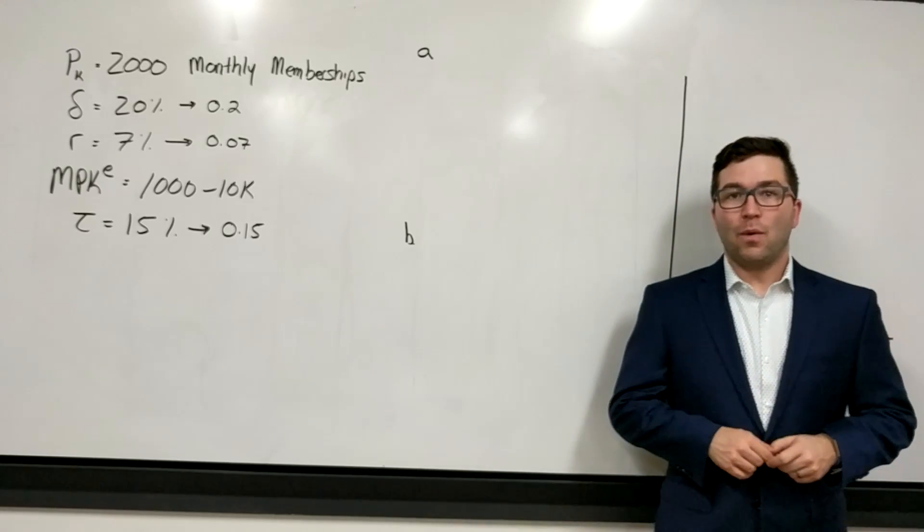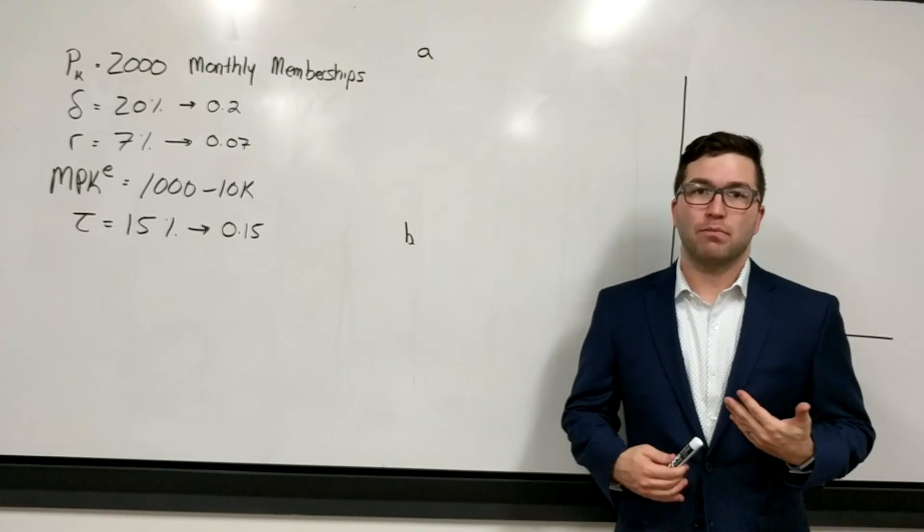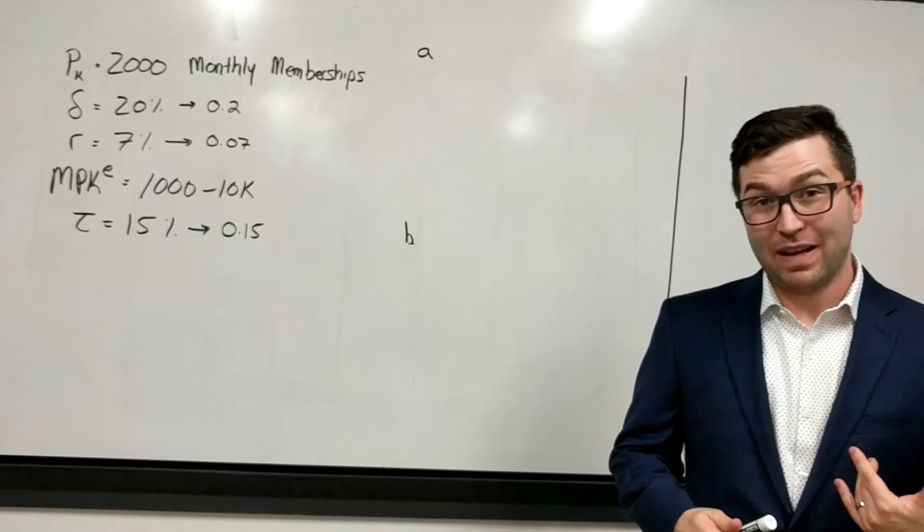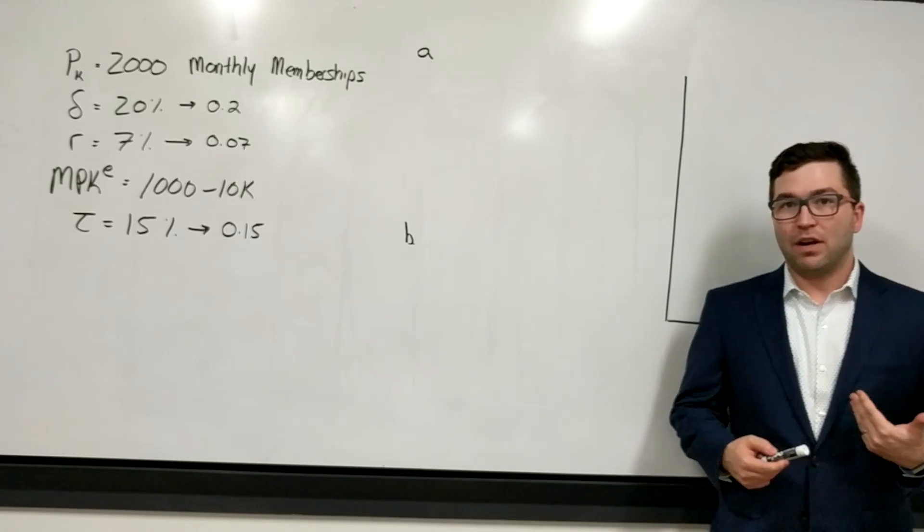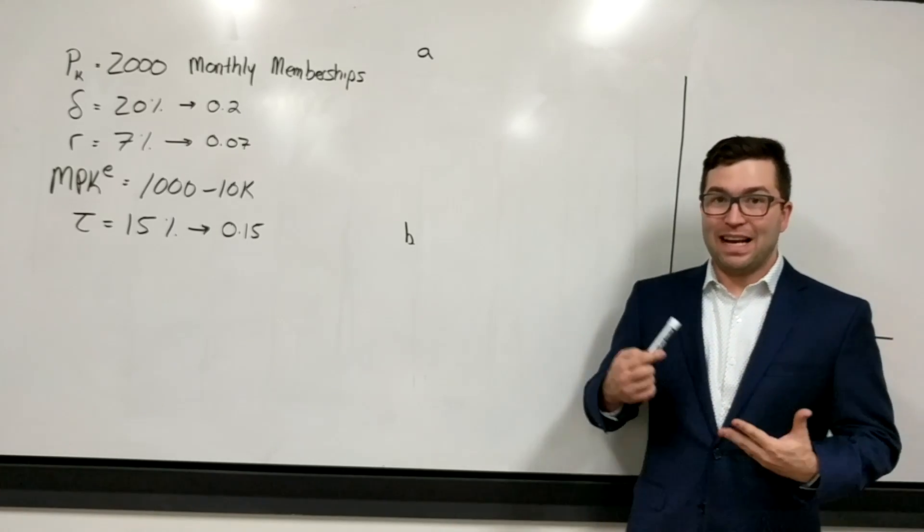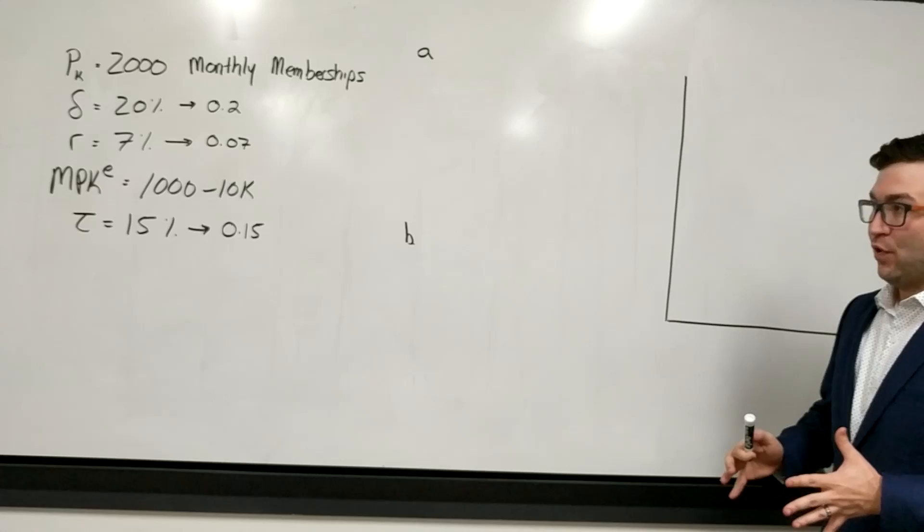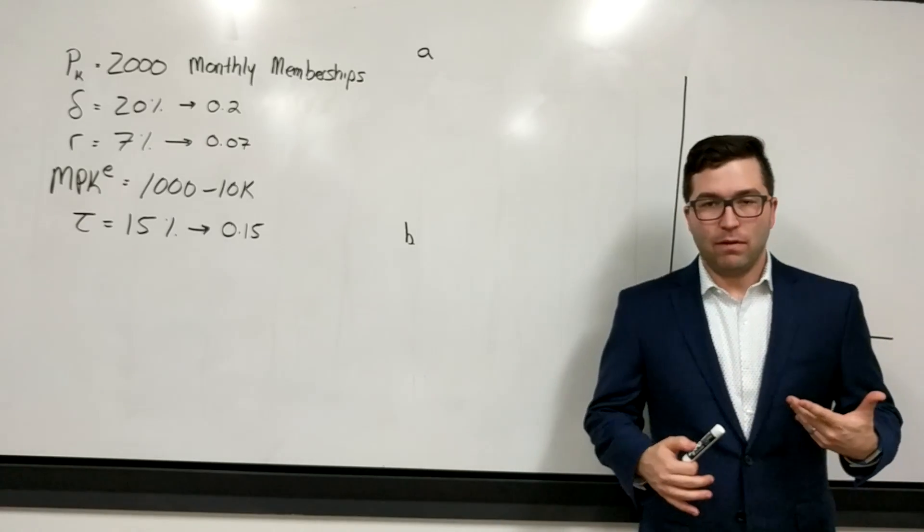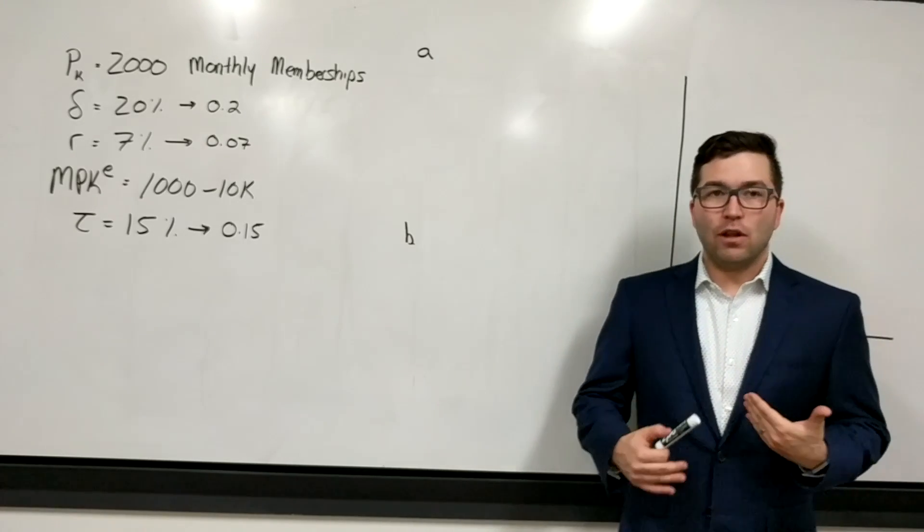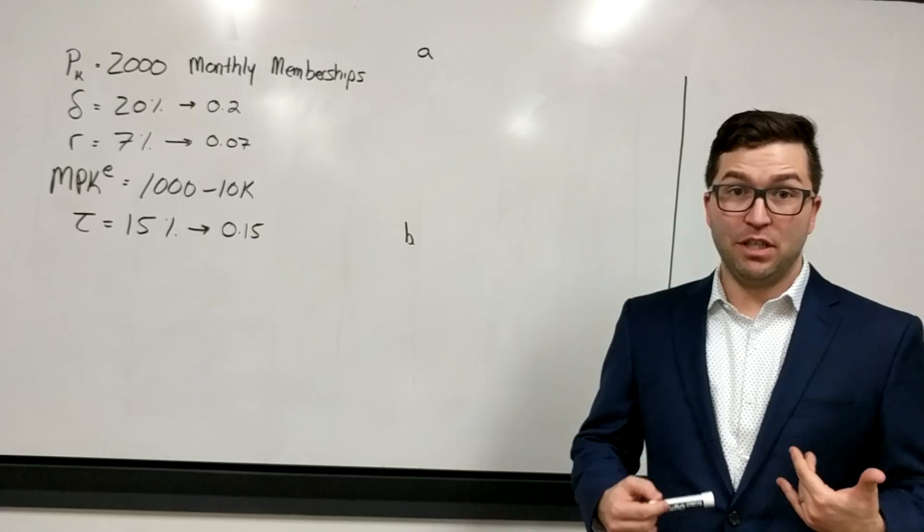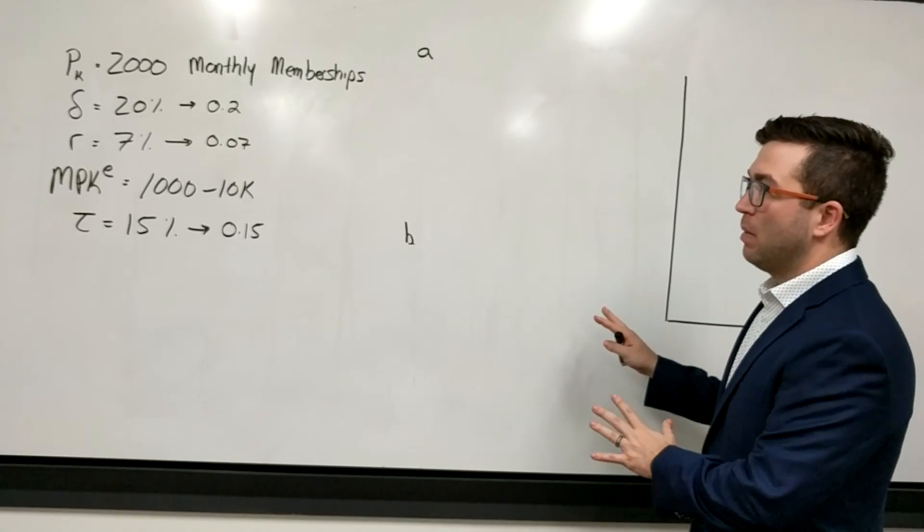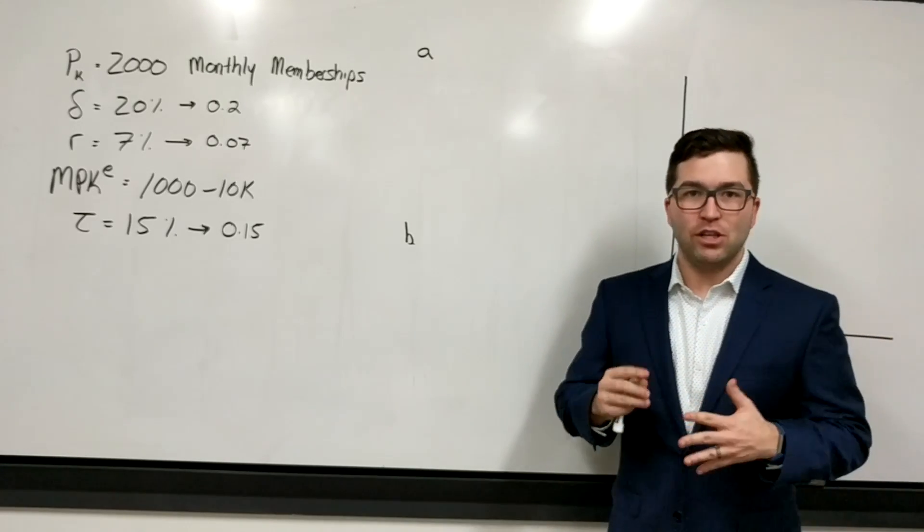Hi students, I wanted to post a practice problem on the user cost of capital and the marginal product of capital, finding the equilibrium, finding what the user cost is, what the optimal level of capital is, just to give you a little extra practice on this material. The example problem is going to follow the Michigan text, second edition of his macroeconomics policy and practice chapter 19.